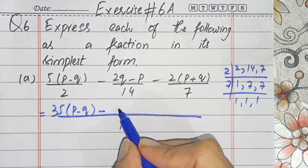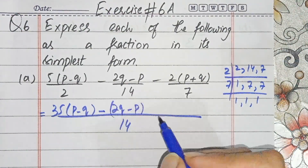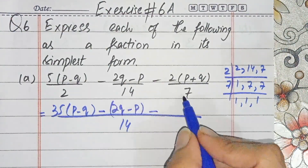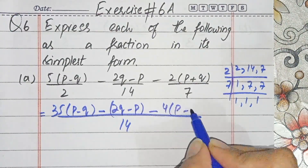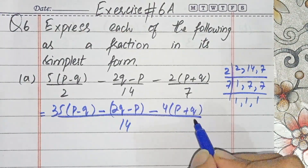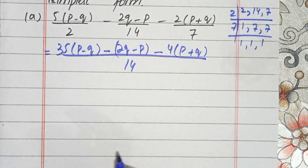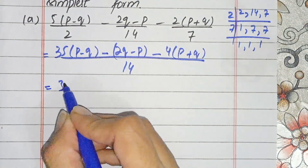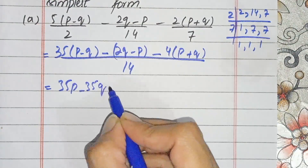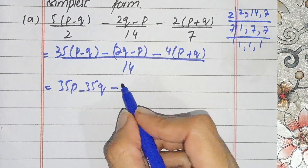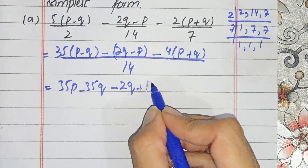14 times 1 gives 14 for the term (2Q minus P), and 7 times 2 gives 14 for the term (4P plus Q). So we will multiply through: 35P minus 35Q minus 2Q minus positive P.